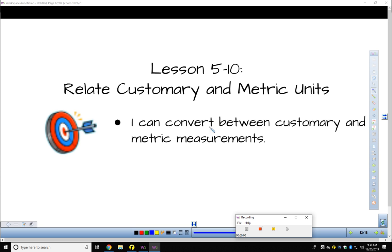Final section of topic five here is where we're actually going to be relating customary metric units. We're going to convert between customary and metric, and we're not going to do an example of every type that we could do here, but we are going to convert at least once between the different types of lengths, the different types of mass, and the different types of capacity.